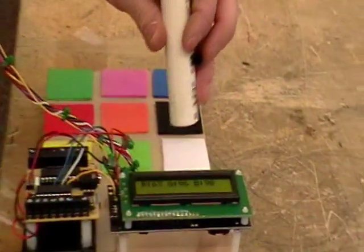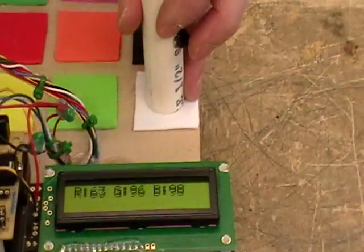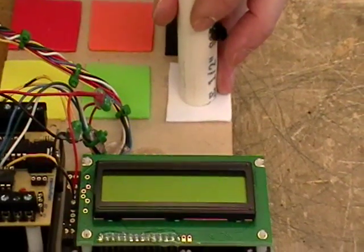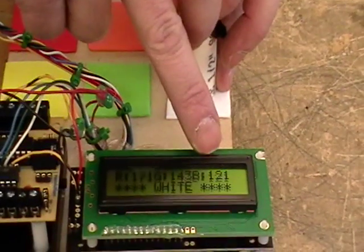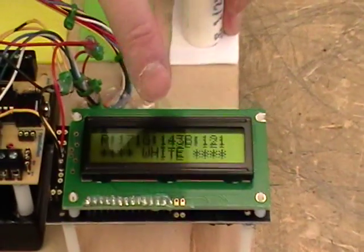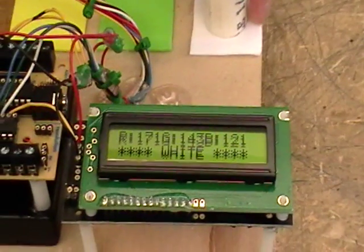I'm going to put it on the white pad here. White should reflect all the different colors, so I should see high values from red, green and blue. Based on my numbers and my programming, it'll predict or tell me that it's a white surface.